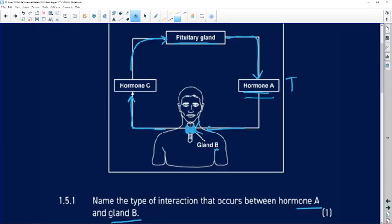This is Life Sciences Paper 1 from November 2022. Thyroid Stimulating Hormone. Hormone C is going to be thyroxine.